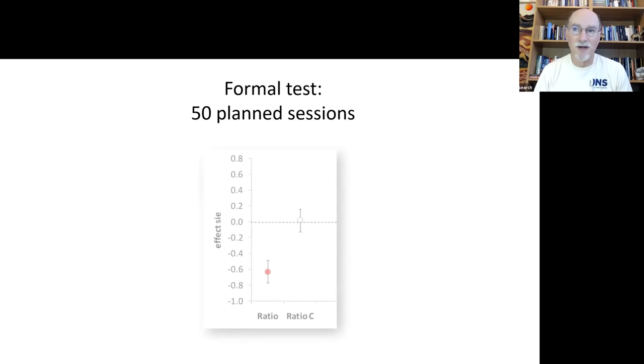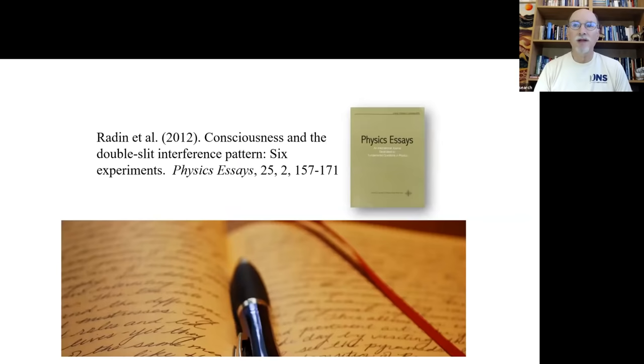So here's just one example of 50 planned sessions in this kind of experiment. You can see then that this is the control. This is when observing, 95% confidence intervals. This is a very strong difference. Again, magnitude-wise, it's pretty small. But statistically speaking, we have high confidence that this is a real effect.